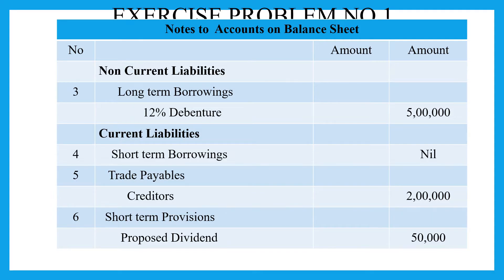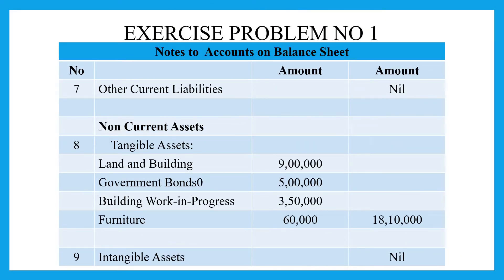We will put debentures under one place, that is ₹5,00,000. Next is current liabilities. The first subheading is short-term borrowings — ₹4,000. Trade payables are creditors, that is ₹2,00,000. Short-term provisions — provision for taxation and proposed dividend, that is ₹50,000.